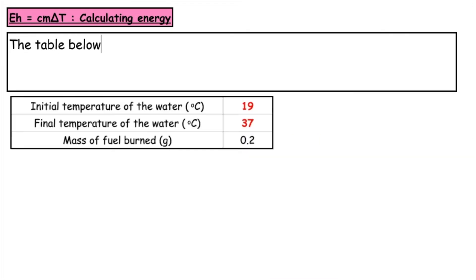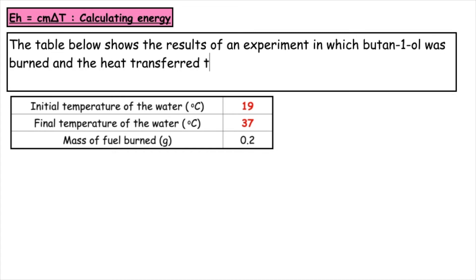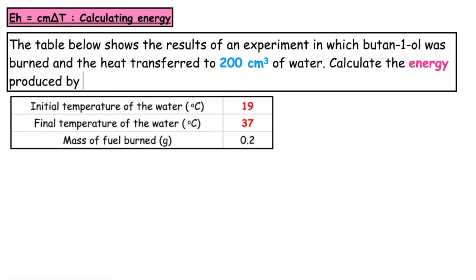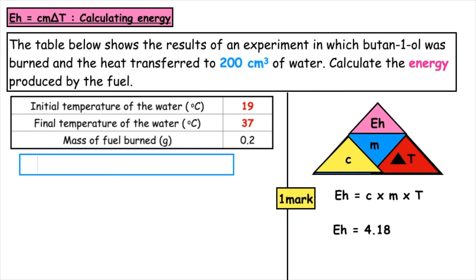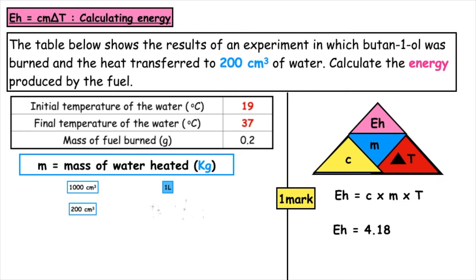Here's a third example in a slightly different format. The table shows the results of an experiment in which butane was burned and the heat transferred to 200 centimetres cubed of water — calculate the energy produced by the fuel. We write out the formula: Eh is equal to CmΔT. We substitute in the heat capacity of water as 4.18, since that's what's being heated. The volume of water is 200 centimetres cubed, so we convert that to 0.2 litres.